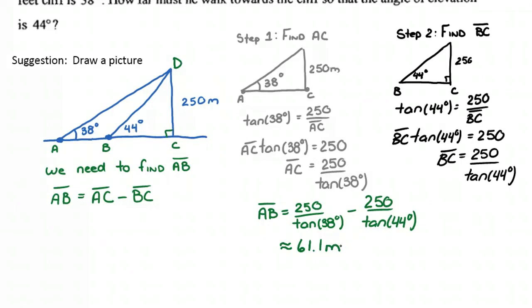So there's my answer. Therefore, he's walked 61.1 meters towards the cliff. We could, this is a word problem, so we should say, therefore, he has walked 61.1 meters towards the cliff.